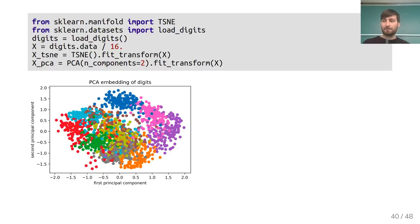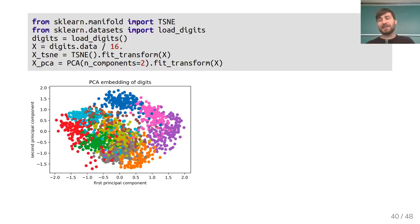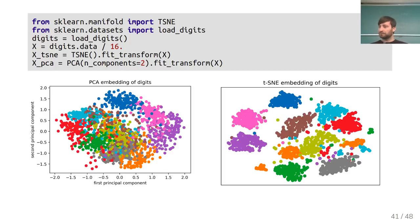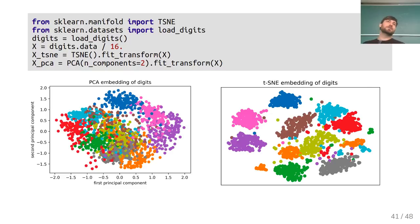On the digits dataset, PCA is already kind of interesting — some classes like zeros are pretty well separated even in this completely unsupervised linear projection. But running t-SNE gives a much clearer separation between classes. This has a random initialization, so every time you run it you may get a slightly different result. There's a great O'Reilly blog post about t-SNE that shows the iterations — everything starts as a block of points and then they move away from each other.